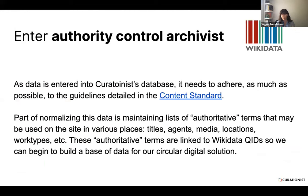There's a lot of chaos in maintaining any sort of standard with this project, even internally for our staff archivists who are adding layers. This is where our authority control archivist comes in. As data is entered into the Curationist database, it needs to adhere as much as it can to our content standards, which are public for everyone to see. Our content standards use a lot of DEI best practices in terms of archivist work. Part of normalizing this data is maintaining a list of authoritative terms that may be used on the site in various places — titles, agents, media, locations, work types, etc. These authoritative terms are linked to Wikidata QIDs so we can begin to build a base of data for our circular digital solution.